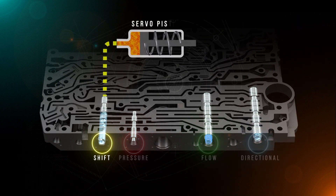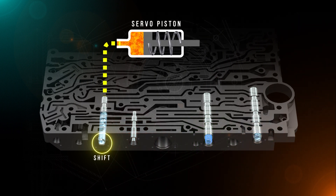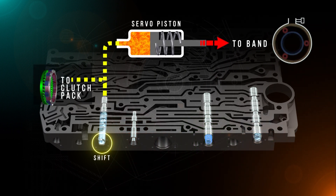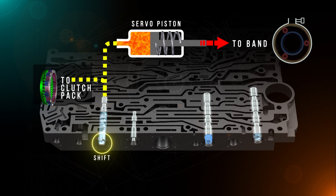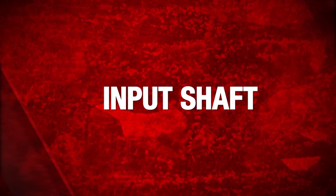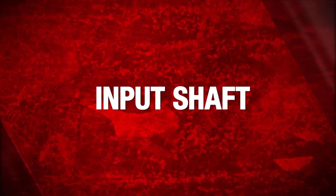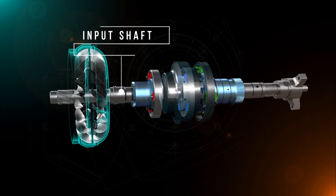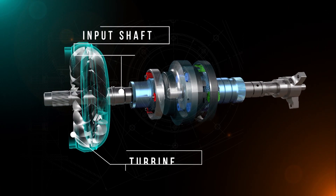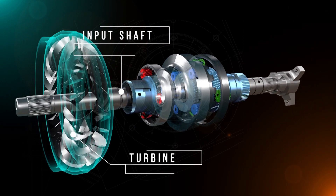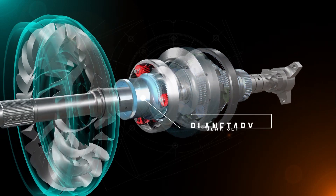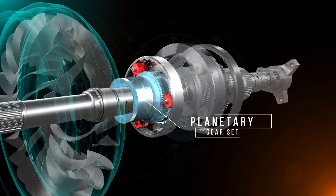These valves divert fluid pressure to specific servos, which control the operation of brake bands, or direct it to a particular clutch pack, allowing the selection of a gear. The input shaft is driven by the turbine within the torque converter at one end and is attached to the first of a series of planetary gear sets at the other end.